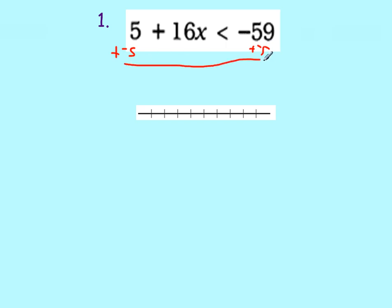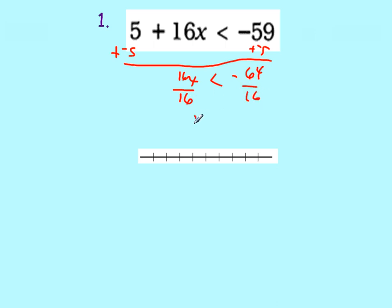And we're going to solve that. And we're going to get 16x is less than negative 59 plus negative 5 is negative 64. And then our next step, let me move this down so I have more room, is to divide by 16. Now, a lot of students will flip the sign here because they see that 64 is negative. They do not flip the sign in this case because we're dividing by 16.